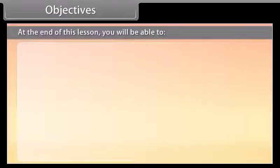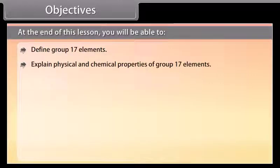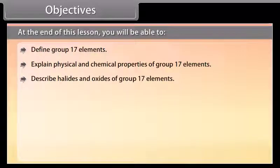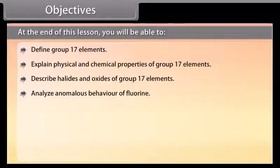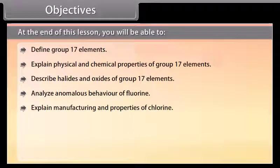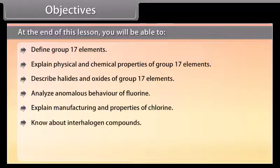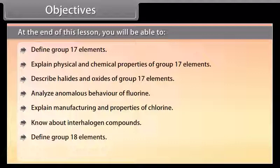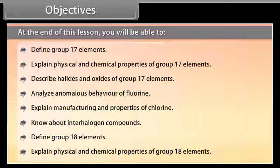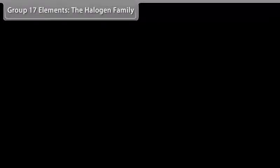Objectives: At the end of this lesson, you will be able to define group 17 elements, explain physical and chemical properties of group 17 elements, describe halides and oxides of group 17 elements, analyze anomalous behavior of fluorine, explain manufacturing and properties of chlorine, know about interhalogen compounds, define group 18 elements, and explain physical and chemical properties of group 18 elements.